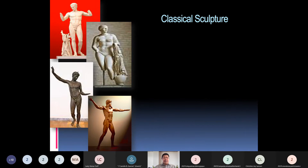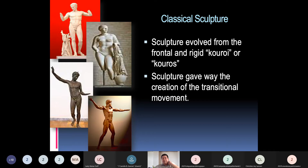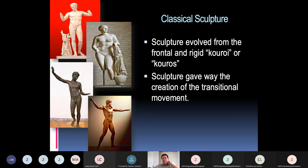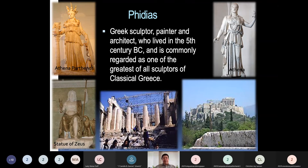Among the sculptors of the Classical period, sculpture evolved from the frontal and rigid kouros form toward transitional movement. This was particularly reflected in the work of Phidias, Polyclitus, Myron, and Praxiteles. Phidias was a Greek sculptor, painter, and architect who lived in the 5th century BC. He is commonly regarded as one of the greatest of all sculptors of Classical Greece. Among his works are the Athena Parthenos and the Statue of Zeus.